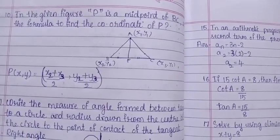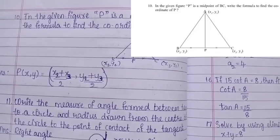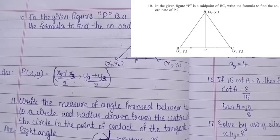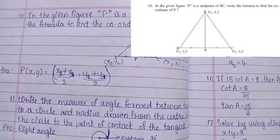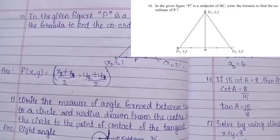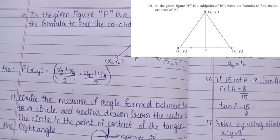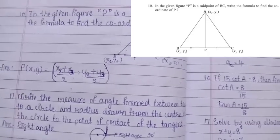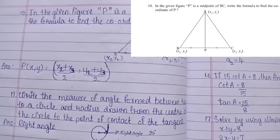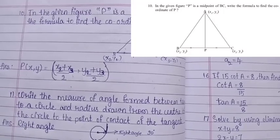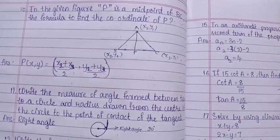In the given figure, P is the midpoint of BC. The formula to find the coordinate of P: since BP and PC are equal, B is (x2, y2) and C is (x3, y3). Therefore P(x, y) = ((x2 + x3)/2, (y2 + y3)/2). So the midpoint formula gives P as the midpoint of BC.